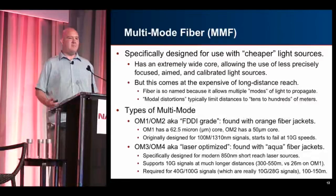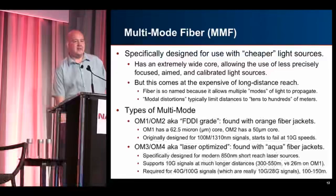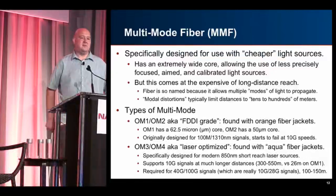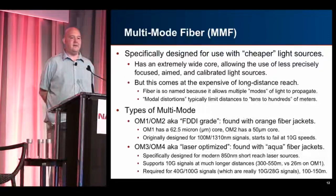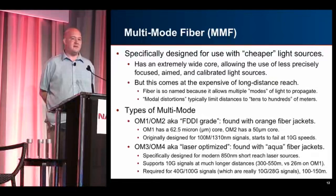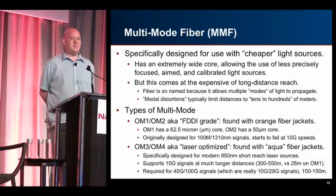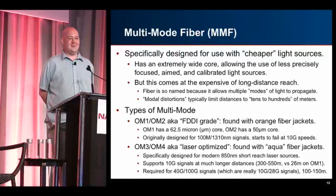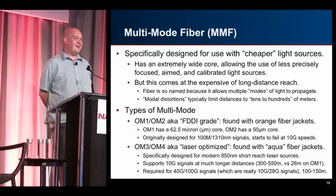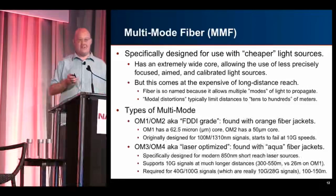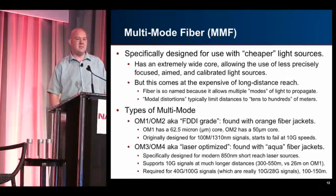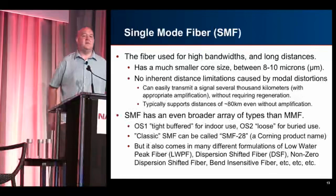OM3 and OM4 are the more modern stuff — called laser-optimized — and you'll see those with aqua jackets. They're specifically designed for modern high-bandwidth laser systems sending at 850nm. They support 10G signals much better: 300 to 500 meters instead of around 20 meters. They're basically required for 40G and 100G. And there's really no such thing as 40GbE — it's 4×10G — and really no such thing as 100GbE as a single lane — it's 4×28G, sending those signals about 100 meters.